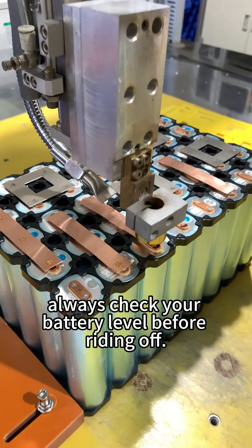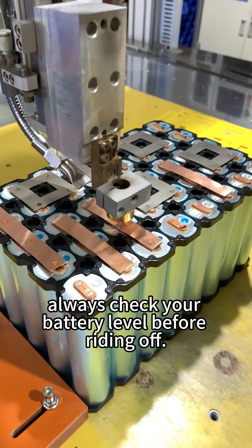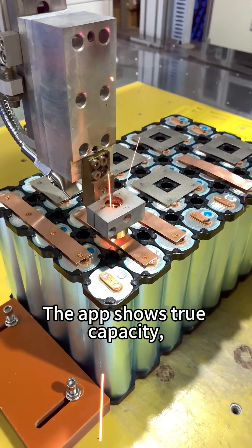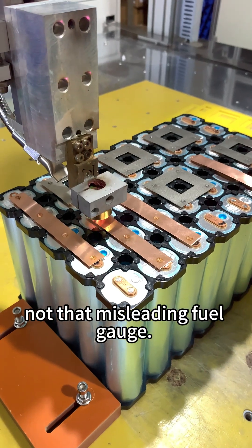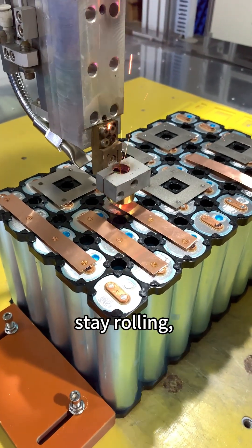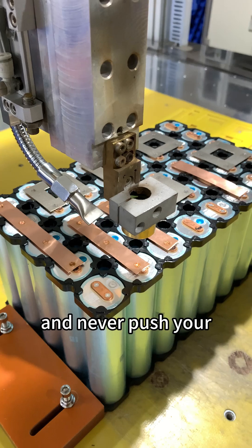But remember, always check your battery level before riding off. The app shows true capacity, not that misleading fuel gauge. Stay charged, stay rolling, and never push your bike home again.